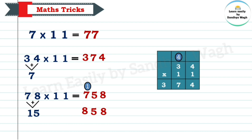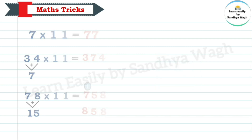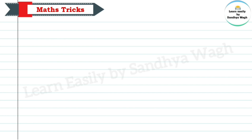We have learnt how to multiply a 2-digit number by 11. Now let's learn how to multiply a 3-digit number by 11 using our trick.